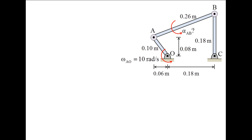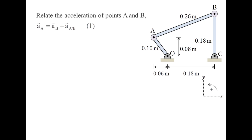At this instant, what is alpha AB, which is the angular acceleration of link AB? Identify your coordinate system and label the positive direction of your coordinates. In this case, a rectangular coordinate system is more convenient. Indicate the positive direction of rotation. The angular acceleration of link AB appears in the equation relating the acceleration of points A and B. The acceleration of point A is equal to the acceleration of point B plus the acceleration of point A relative to B. This is equation 1.